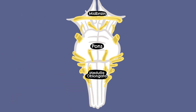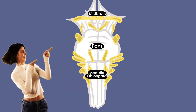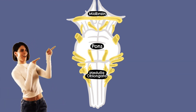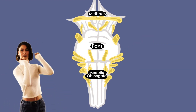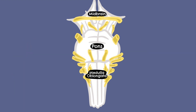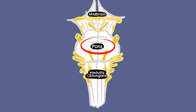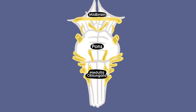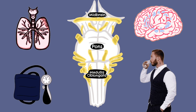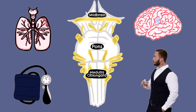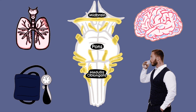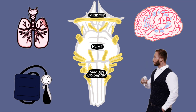So first of all, what is the brainstem? The brainstem is the structure that connects the cerebrum of your brain to your spinal cord and cerebellum. It's made up of three sections: the midbrain, pons, and medulla oblongata. The brainstem contains important nuclei that are critical for many vital functions of life, including the drive to breathe, controlling your blood pressure and heart rate, swallowing, and keeping you conscious.